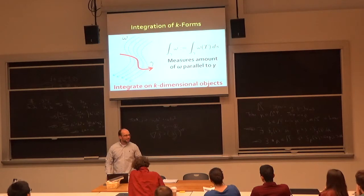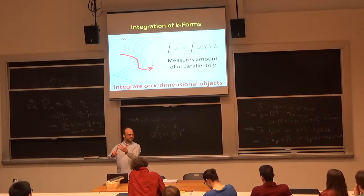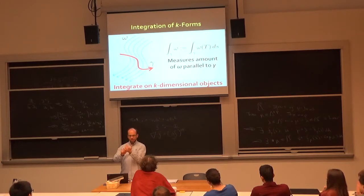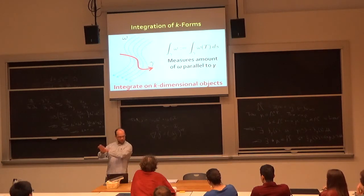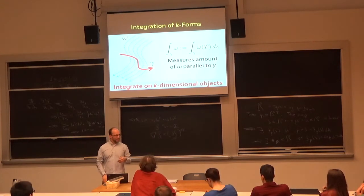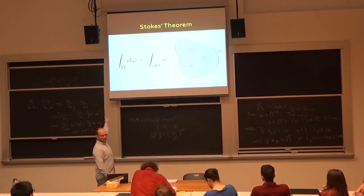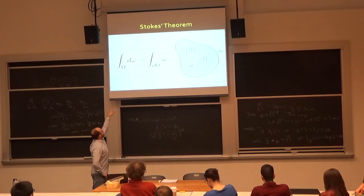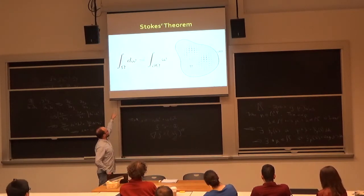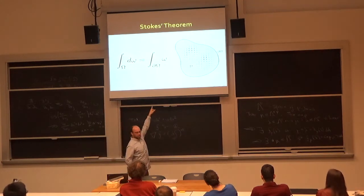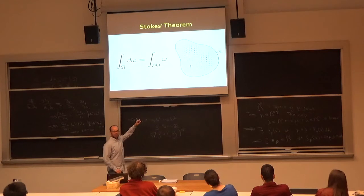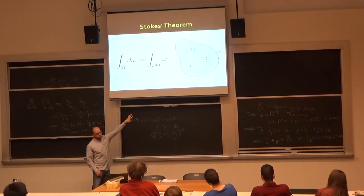For a two-dimensional region, d-omega must be a two-form, so omega is a one-form, and its integral over the region equals the integral of omega over the boundary curve. The dimensions match perfectly. All the classical theorems — Stokes, Divergence, Green's, Fundamental Theorem of Calculus — all fit into this single statement: the integral of d-omega over a region equals the integral of omega over the boundary.